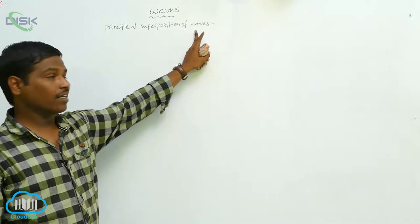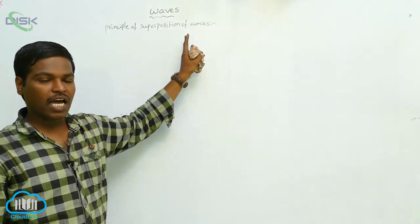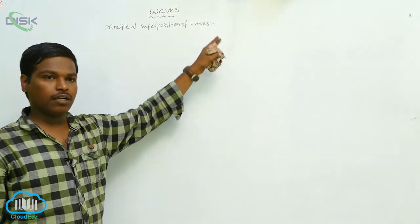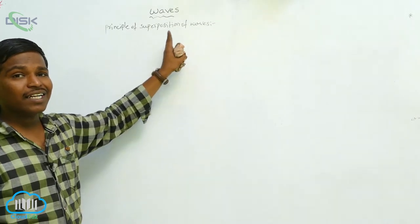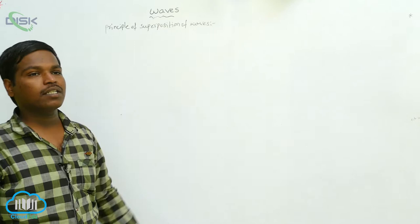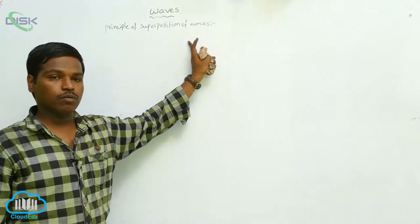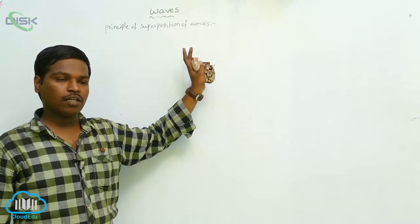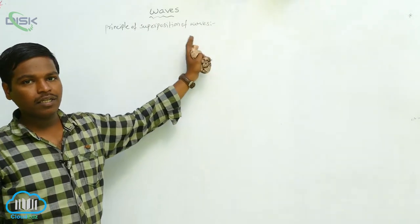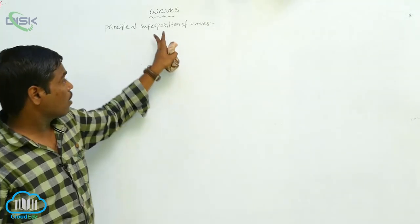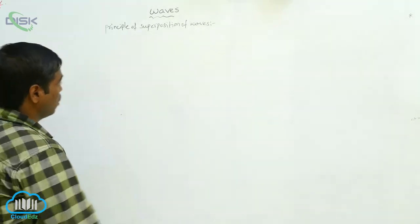The principle of superposition of waves states that when two or more waves traveling in a medium along the same direction or in the opposite direction superimpose on each other, the resultant displacement is the algebraic sum of the individual displacements. This is called the principle of superposition of waves.